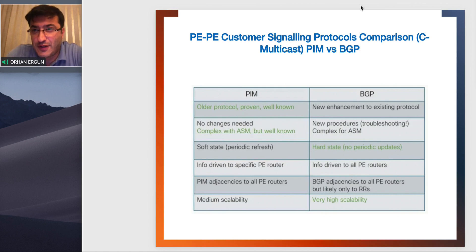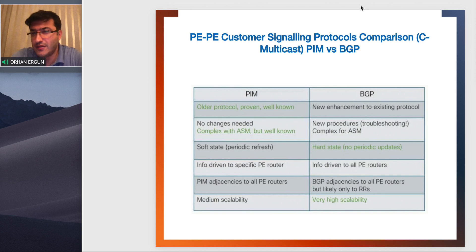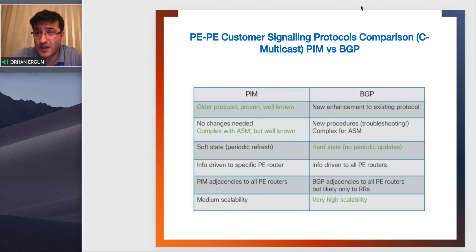In the last video, I was comparing PIM, MLDP, and point-to-multipoint signaling protocols. They were also competing by signaling, but as I said, scale is the problem — don't use it if it's not a less protocol. Maybe you can use it in a small environment. When it comes to scale, BGP will of course be the winner. PIM is not bad, but after a couple thousand, nothing can beat BGP.